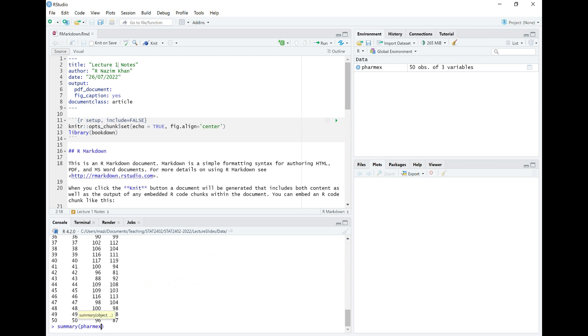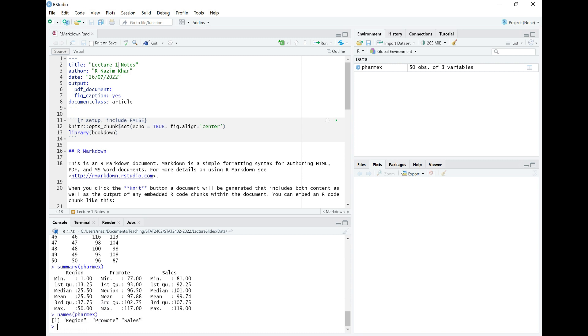I can look at a summary of this. Summary of Pharmex. So it gives me, the region doesn't make any sense because this is just an identifier. But promotional here, what the minimum spend is 77%. The maximum is 117%. The minimum sales is 81%. The maximum sales is 119%. And I've got the mean, median and all those kinds of things there as well. And I can do more of this as we go through. We'll take a look at more of these ideas. But if I take a look at something like names of my variable here, Pharmex. It tells me what the names are. Region, Promote and Sales. So those kinds of investigations I can do as well.